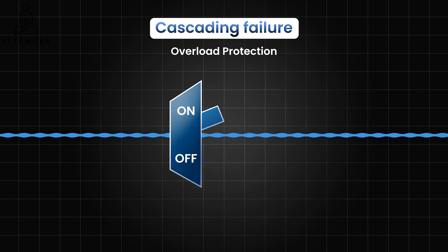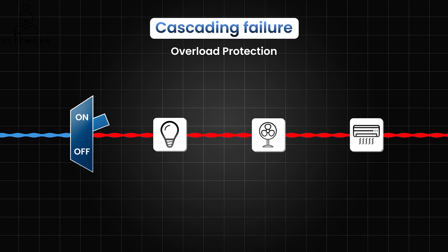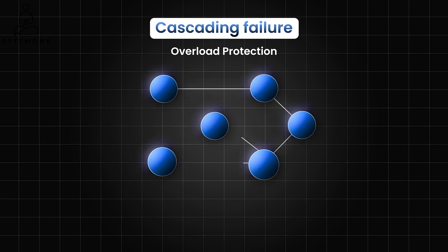Overload protection occurs when too many devices are connected to a circuit, drawing more current than the circuit wiring can safely handle. The circuit breaker senses the excess current and trips, interrupting the flow of electricity to prevent the wires from overheating and potentially causing a fire. In the context of microservices, the circuit breaker pattern is primarily focused on overload protection.